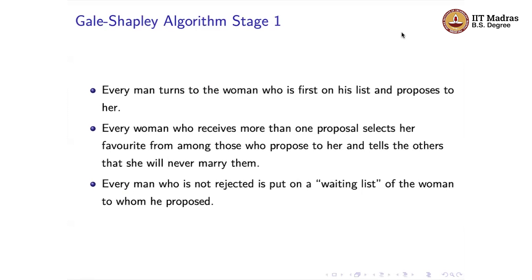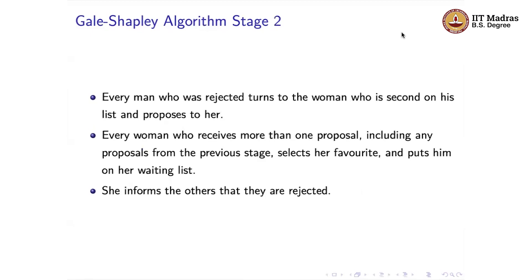Only at the end of the algorithm will the final pairing happen. In stage two, every man who was rejected in the first stage turns to the woman who is second on his list and proposes to her. Again, every woman who receives more than one proposal — including any proposals kept in the waiting list from the first stage — selects her favorite and puts him on her waiting list, informing the others that they are rejected.